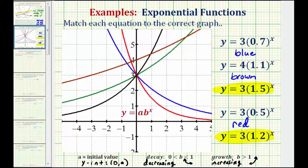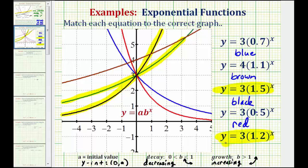Since a is equal to three, they also have a y-intercept of positive three. So now we focus on the green graph and the black graph — we don't need to be concerned about the brown graph since we already matched that one. Notice how the black graph is increasing faster, which means its value of b is larger. Since 1.5 is greater than 1.2, the equation with b equal to 1.5 represents the black graph, and the equation with b equal to 1.2 would be the green graph.